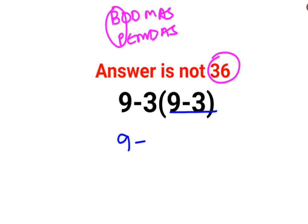So first we will keep as it is. 9 as it is, 3 as it is. And there is no sign between 3 and the bracket means it is multiplication. 9 minus 3 is what? 6.